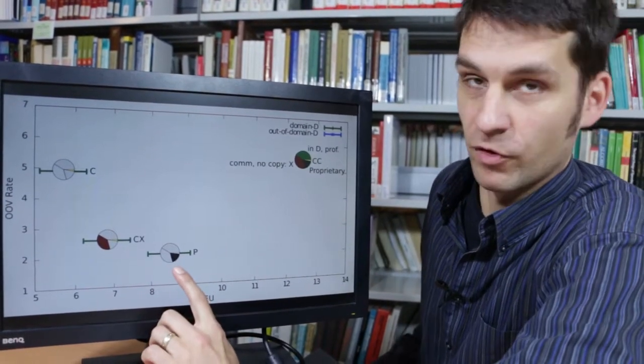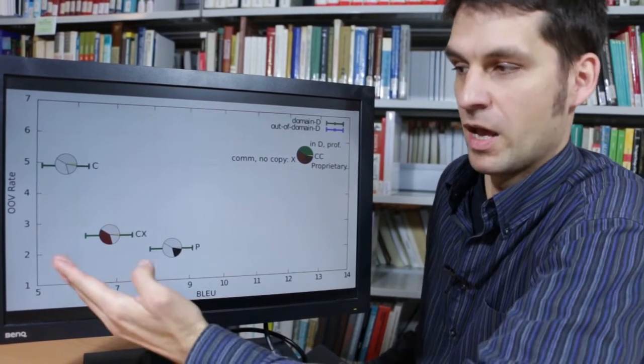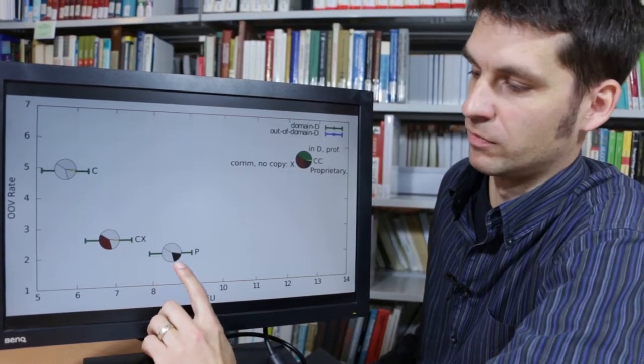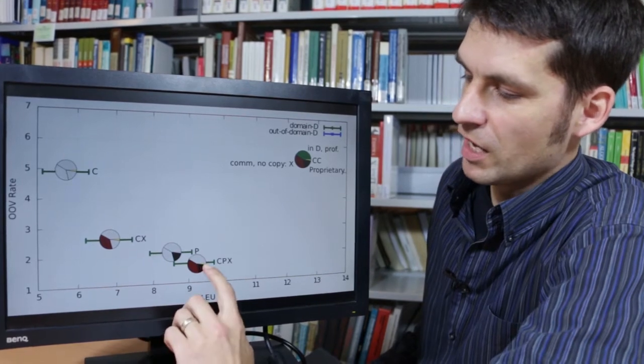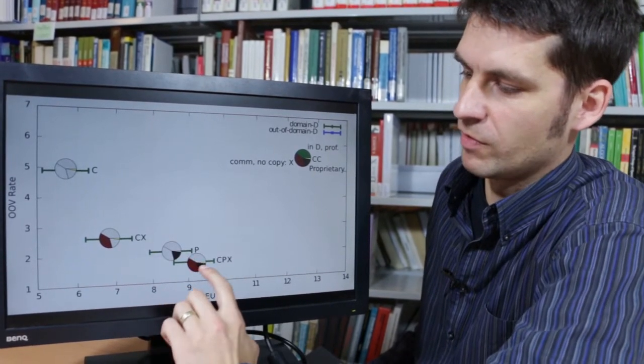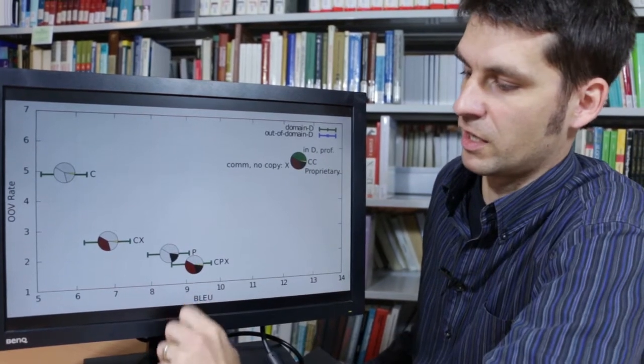If we take professionally translated out-of-domain text, then both the BLEU score is better and the out-of-vocabulary rate is also better. That means that this is somewhat nicer translation. And if we combine all these three bits together, again, both scales get slightly better.